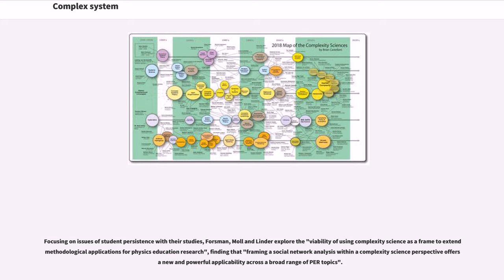Focusing on issues of student persistence with their studies, Forsman, Moll and Linder explore the viability of using complexity science as a frame to extend methodological applications for physics education research, finding that framing a social network analysis within the complexity science perspective offers a new and powerful applicability across a broad range of PER topics.